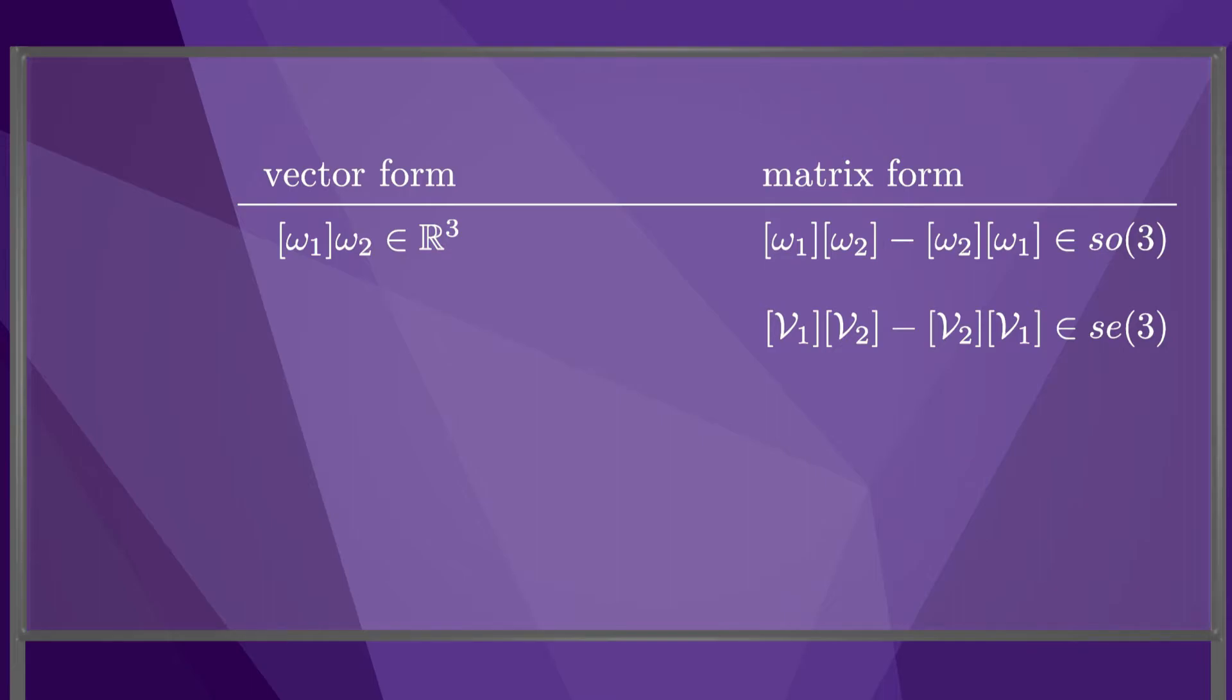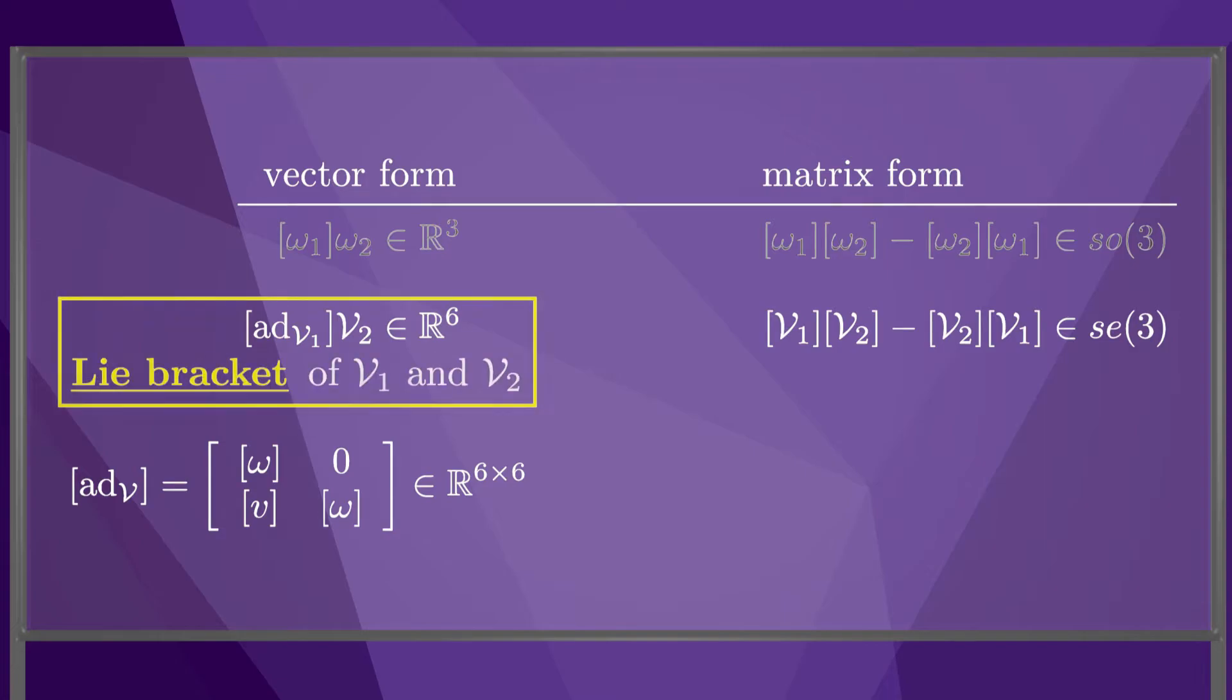In vector form, this is little ad V1 times V2, where the little adjoint of a twist V is defined by the 6x6 matrix shown here. Little ad V1 times V2 is the Lie bracket of V1 and V2.